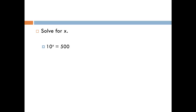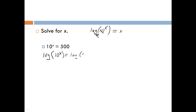In this example we have 10 to the x power is equal to 500. We can use the same property, but we're not using e, so we don't need the natural log. Instead, the common logarithm — written as just log — has base 10. So if you take the common logarithm of 10 to an x power, the base 10 cancels out and you're left with x. Taking the common log of both sides, the log and the 10 cancel on the left, leaving just x, and on the right we have the common log of 500, which you can type into your calculator.